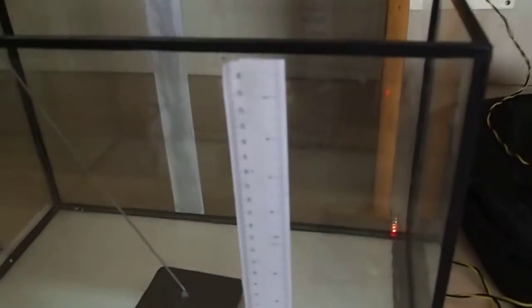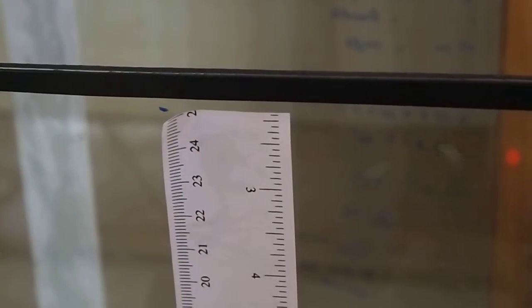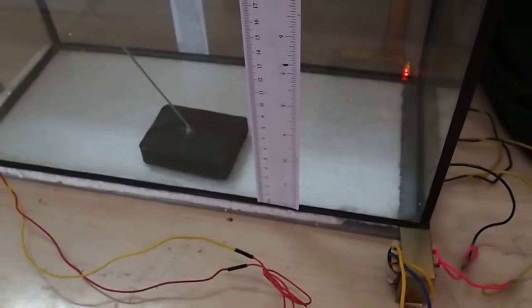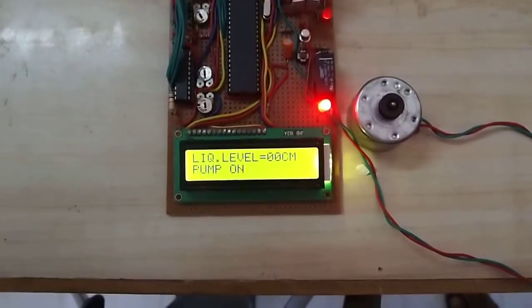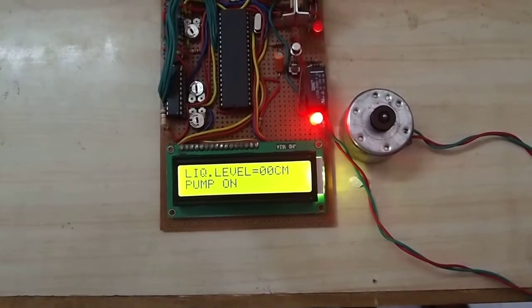Here is the scale of our tank which is exactly 24 cm. This is the maximum height. At 24 cm, the pump turns off, and when the float is at the bottom at 0 cm, the motor starts. That's all, thank you.